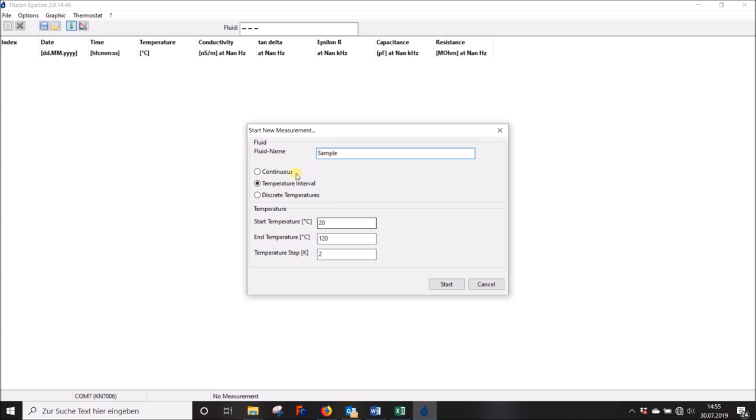Next, you can select your mode of measurement. Select temperature interval for your automatic temperature dependent measurement. Now type in your temperature settings such as the start temperature of your run, which should be above your actual temperature, the end temperature of your run, which should be below the flash point of your substance, as well as the temperature increments.